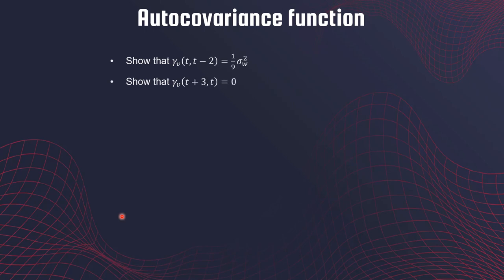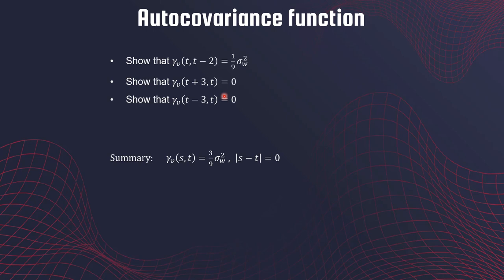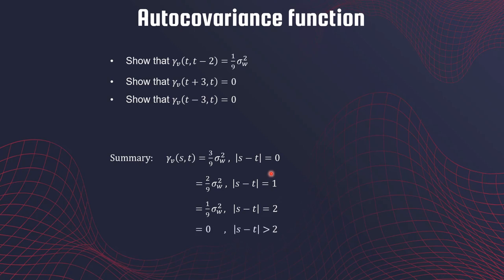Go ahead and try showing that covariance at t and t-2 is also (1/9)*sigma²_w, and at t+3 or t-3 it is zero. To summarize, the autocovariance function gamma_v(s,t) is: (3/9)*sigma²_w if the distance between s and t is zero; (2/9)*sigma²_w if the distance is one; (1/9)*sigma²_w if the distance is two; and zero if the distance is greater than two. This idea that covariance depends on these distances is tied into the concept of stationarity, which will be introduced in a later video.